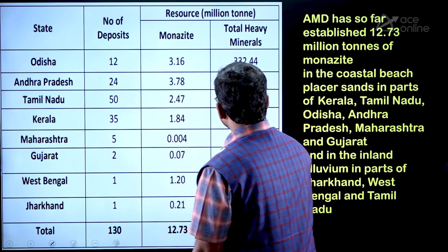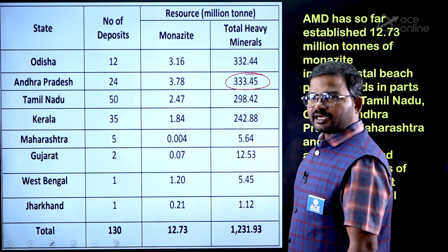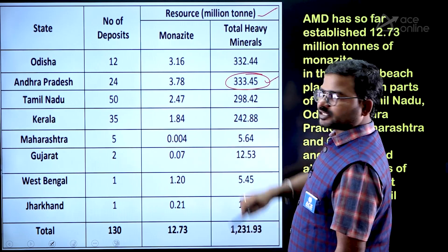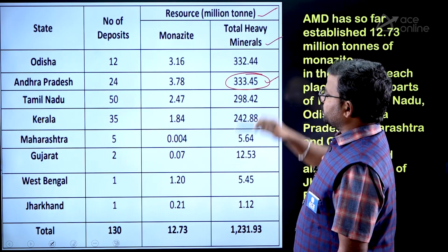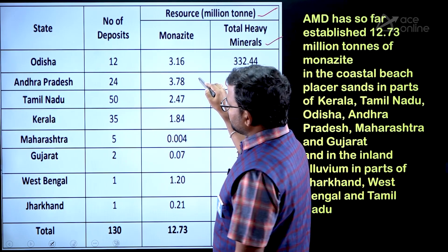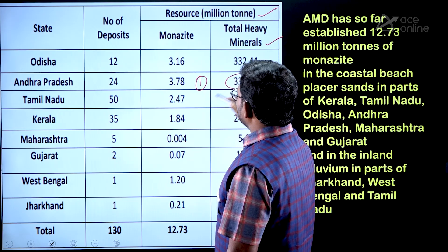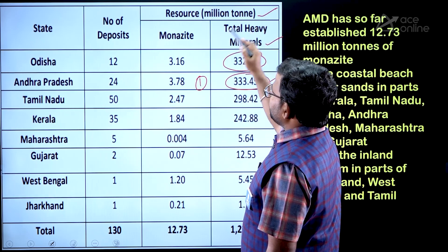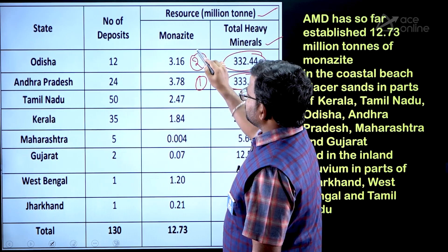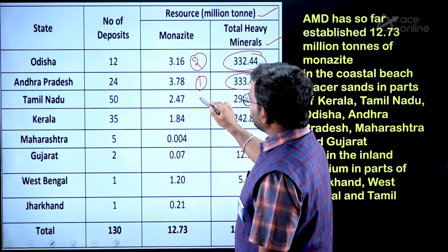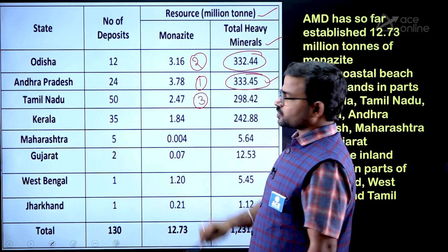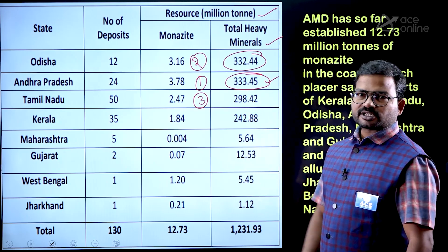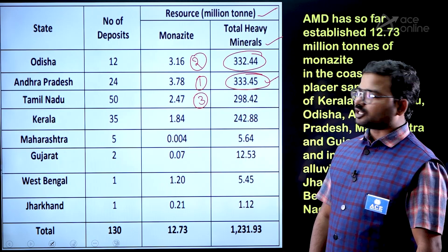In India, Andhra Pradesh has the largest thorium resources: 333.45 million tons. Second place goes to Odisha with 332 million tons. Third place is Tamil Nadu. So based on resources, Andhra Pradesh ranks first.